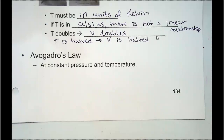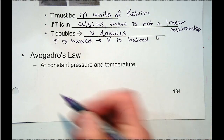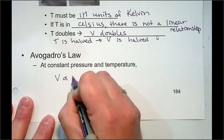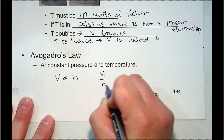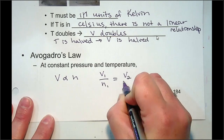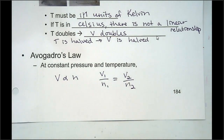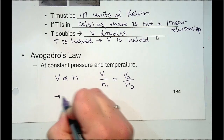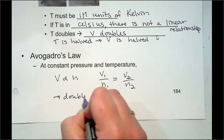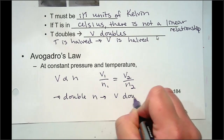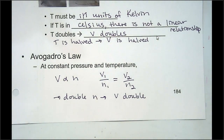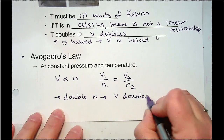The last simple gas law is Avogadro's Law, which relates volume with number of moles: V₁/n₁ = V₂/n₂. If you double the number of moles, your volume doubles. If you put more gas in a balloon, it should expand because you have more of that gas — this one is fairly intuitive.